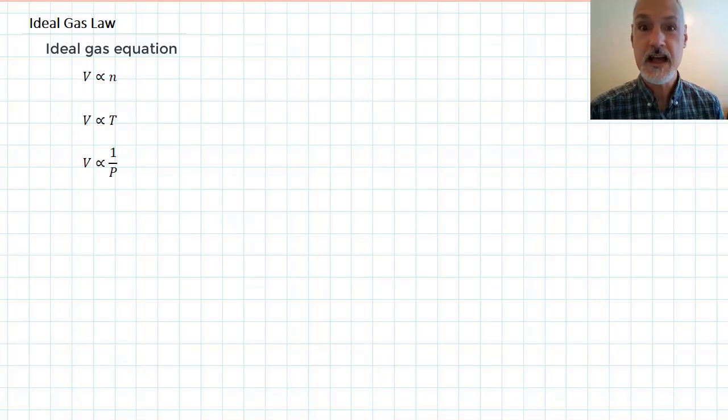In our last program, we looked at the gas laws. I've summarized these over here on the left. The volume is proportional to the number of moles. So again, what does that look like in a graph?